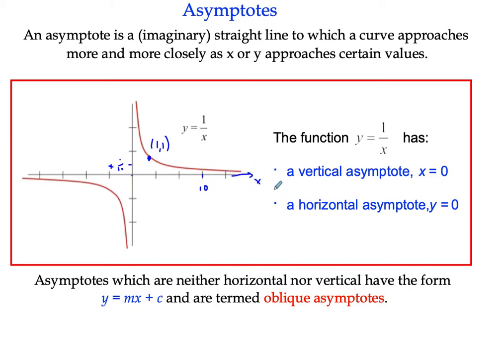It tends towards it, but doesn't ever touch it or certainly cross it at that point. It's a behavior as it tends towards. And similarly, at the top here, you can see the curve will tend towards the y axis, but never actually get to it.